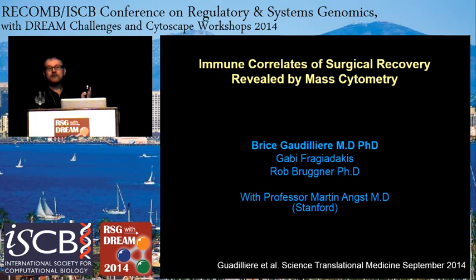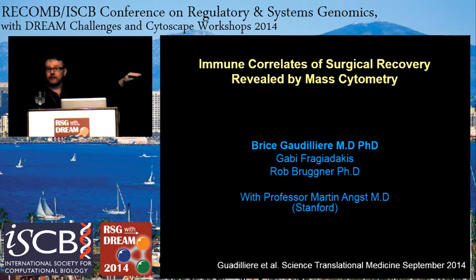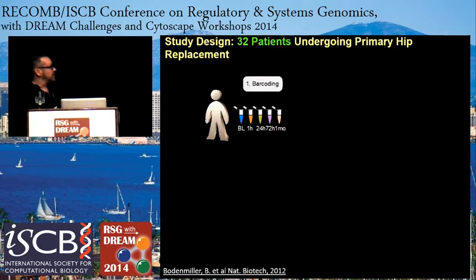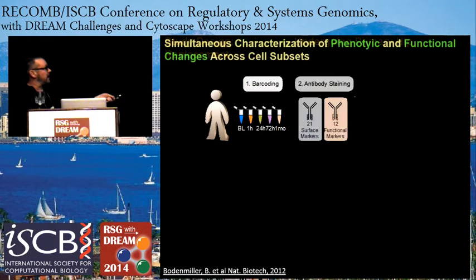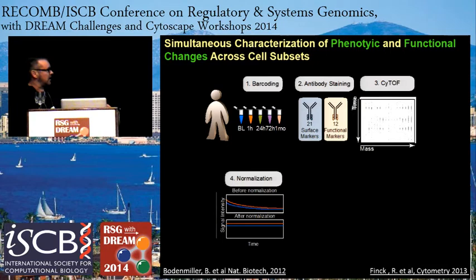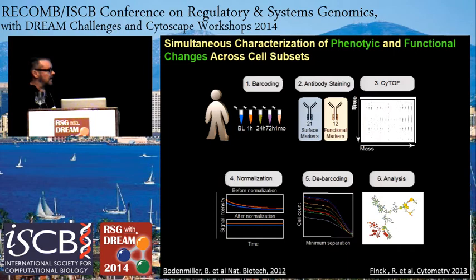We selected about 30 patients without compounding problems like diabetes. We followed their immune system one day before surgery, one hour into surgery, 24 hours, 72 hours, three weeks out — a time series of blood samples — along with a day-by-day record of how they were feeling, progression, and improvement. We barcode or isotope-code each patient's blood samples, mix them, stain in the same tube, debarcode later, run on CyTOF, do data normalization and analysis.